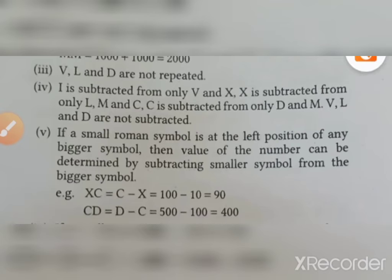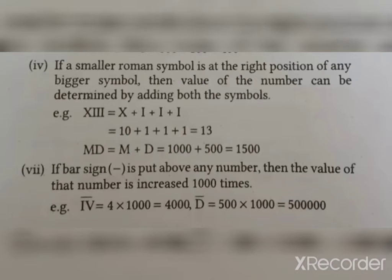If a smaller Roman symbol is at the right position of any bigger symbol, then value of the number can be determined by adding both the symbols. XIII, X plus III equals 10 plus 3 equals 13. MD is equal to M is 1000 plus D is 500, so 1500.